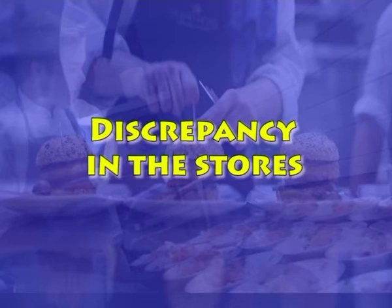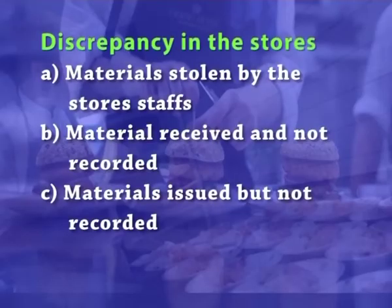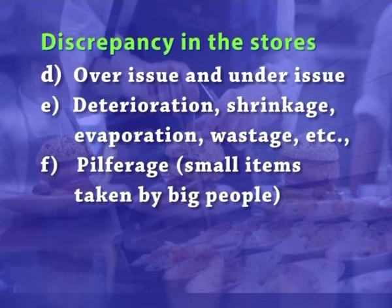Let us now move on to the fourth objective: discrepancy in the stores, which means the difference between booked stock and actual stock. This can happen for the following reasons: materials stolen by store staff, material received and not recorded, materials issued but not recorded, over-issue and under-issue, deterioration, shrinkage, evaporation, wastage, and pilferage — that is, small items taken by staff. Types of discrepancy: there may be either overage or shortage. Overage means actual stock is more than booked stock; shortage means actual stock is less than booked stock. If the discrepancy is within the allowable limit, it may be written off. If it is a higher quantity, then it has to be enquired into and responsibility fixed.